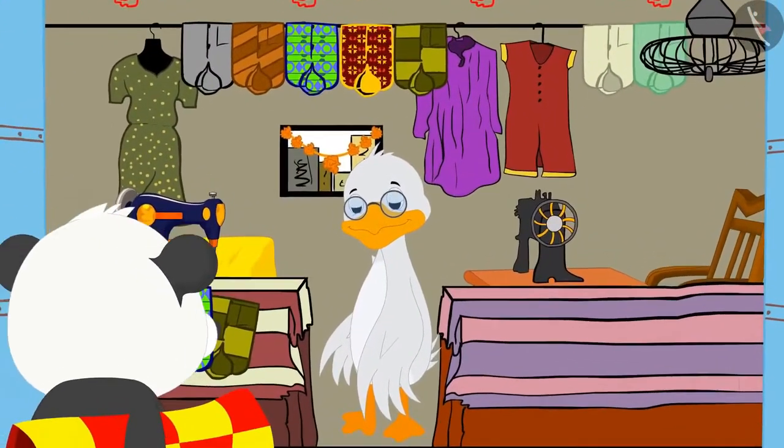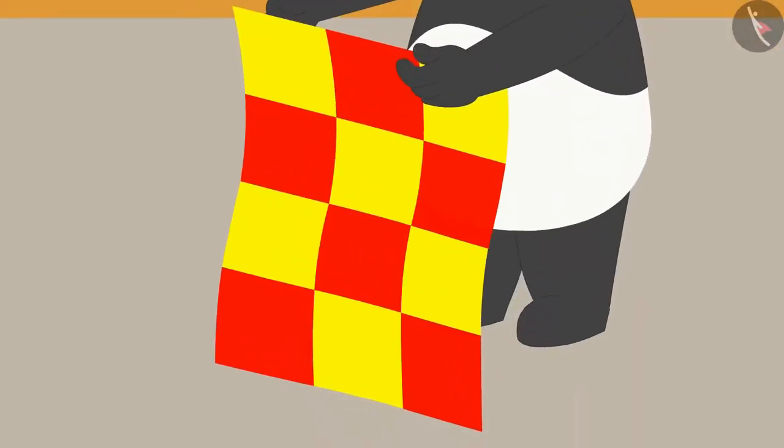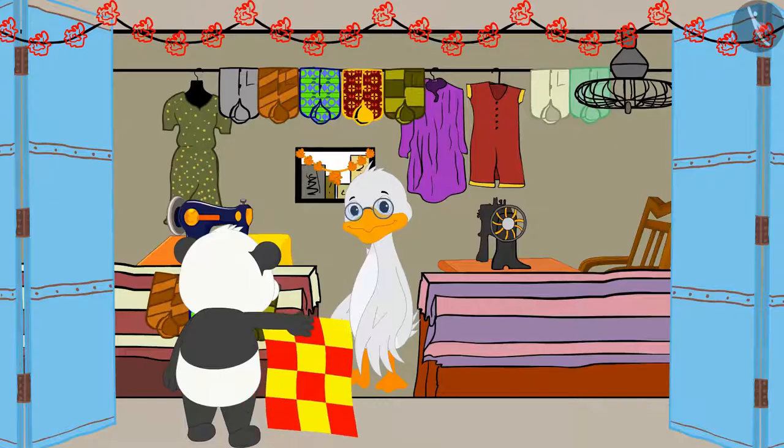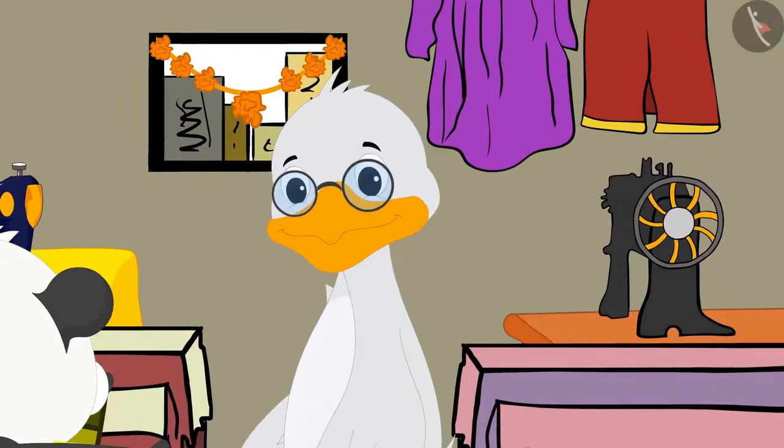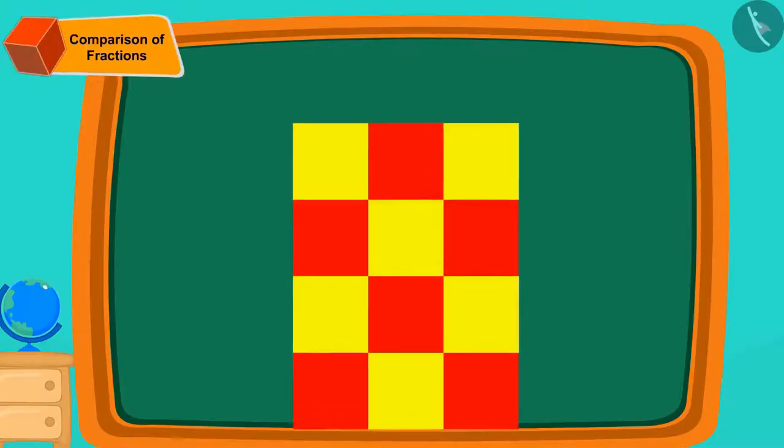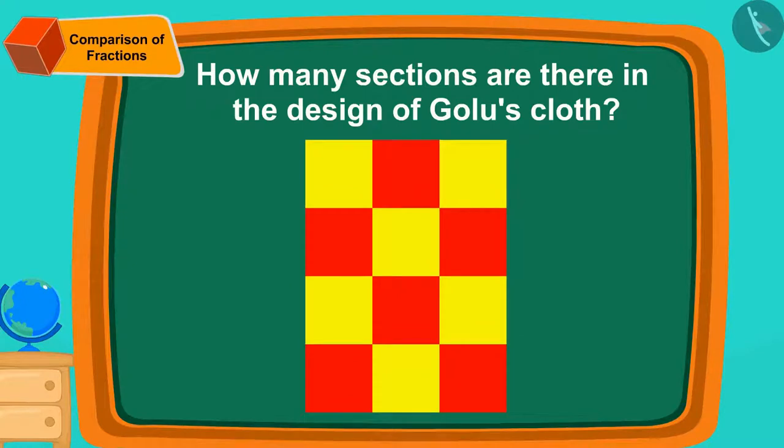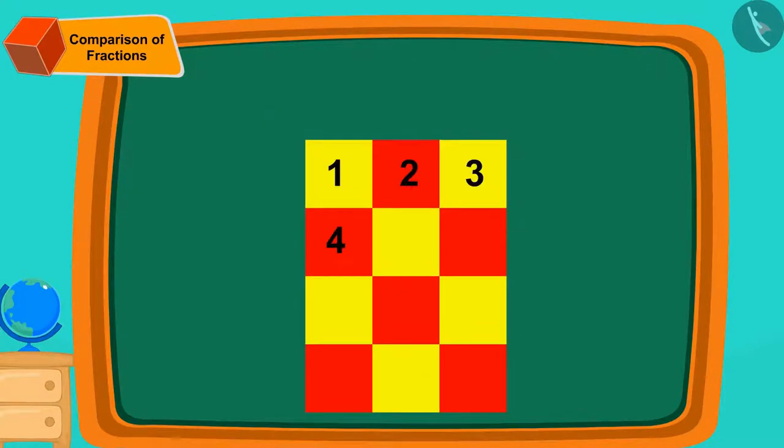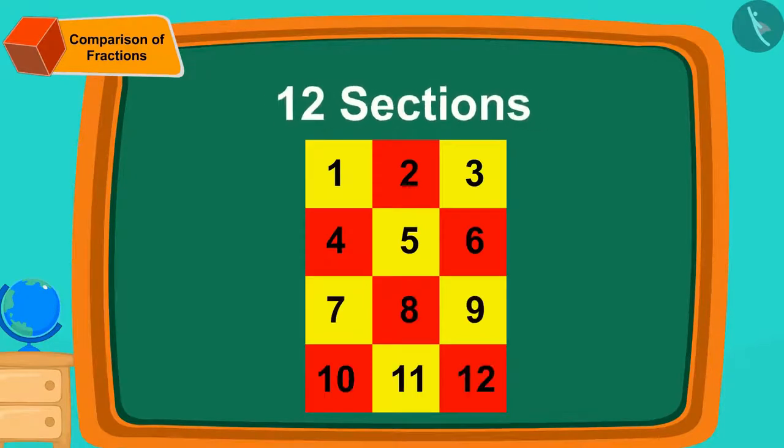Golu has got a cloth of this design to Cha Cha's shop today. He wants to get a trouser stitched for himself. Children, can you tell how many sections are there in the design of Golu's cloth? Yes, 12 sections.